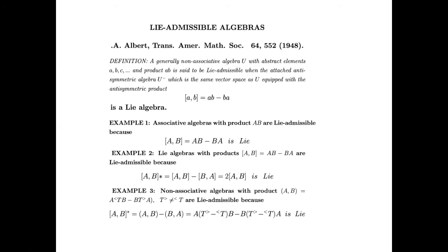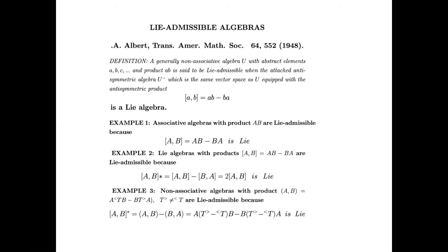I knew several algebras that could now be introduced as Lie admissible. The most fundamental one is conventional associative algebra, which is obviously Lie admissible — at the basis of universal enveloping algebras of Lie algebras. Most importantly, I discovered that my bracket — my parametric deformation of Lie brackets — is indeed Lie admissible. So I achieved my objective of identifying the algebraic character of the new bracket.